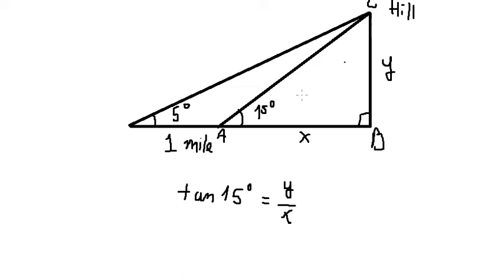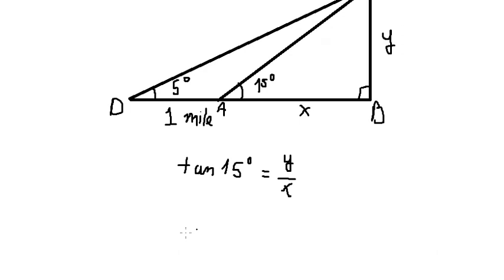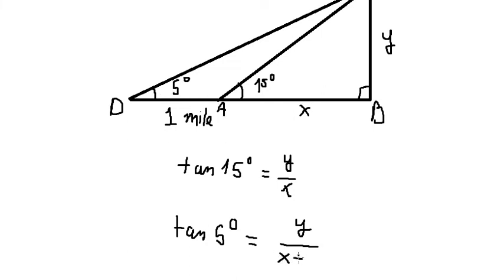Similarly, triangle DBC is also a right triangle, so we have the 5 degree angle. In this situation, we use tan: tan(5°) equals Y over the distance, which should be S plus 1.